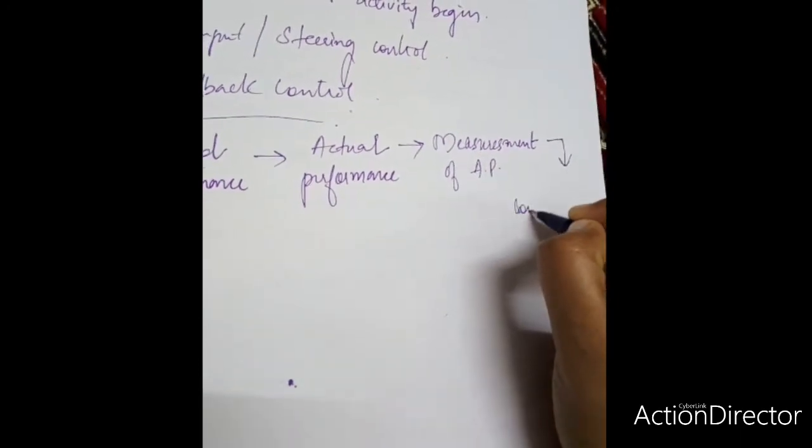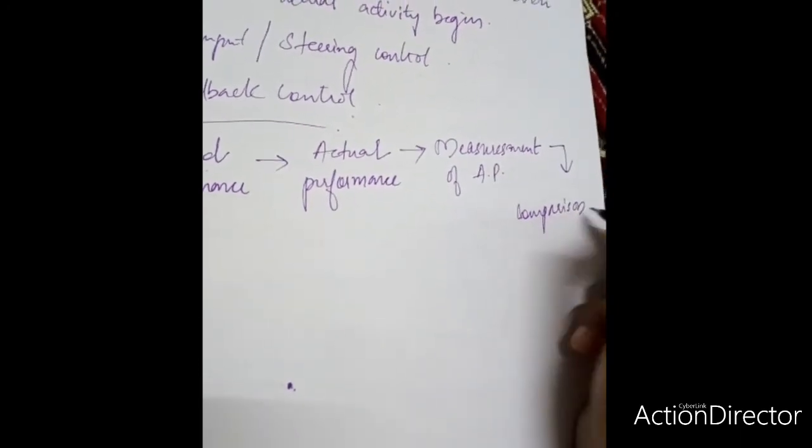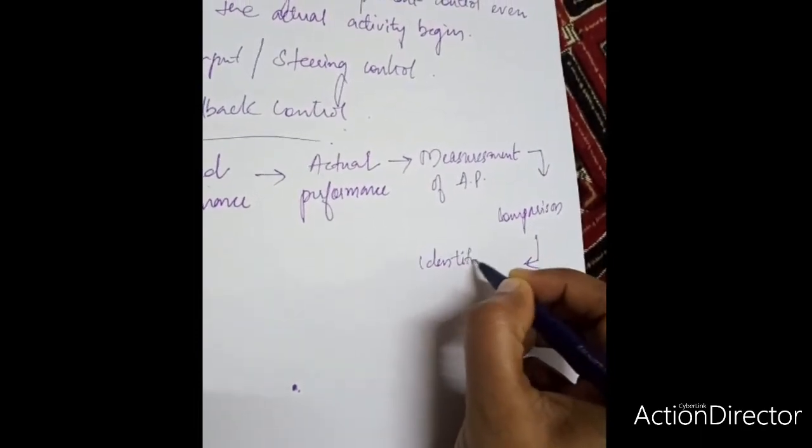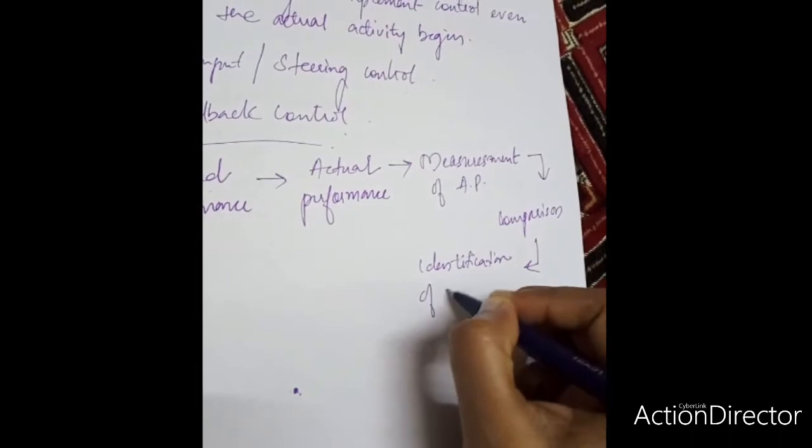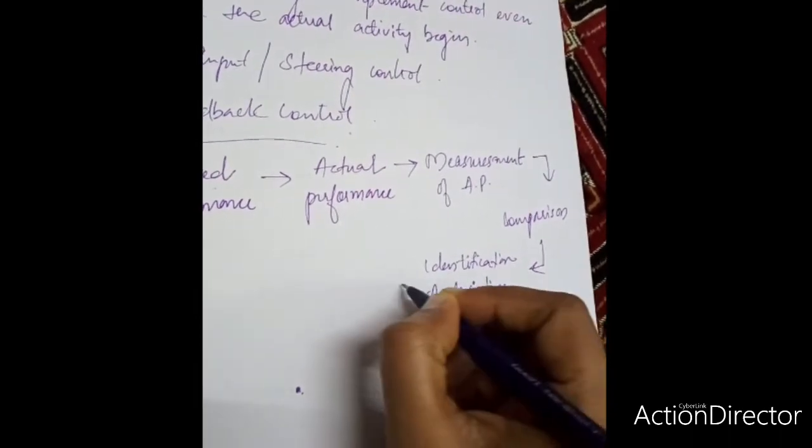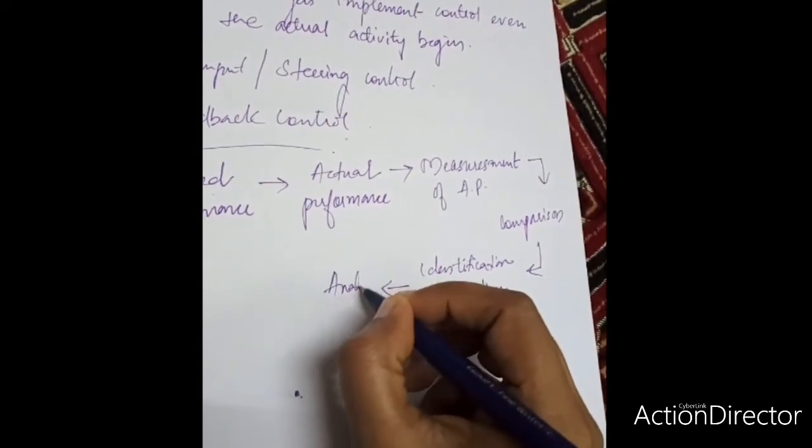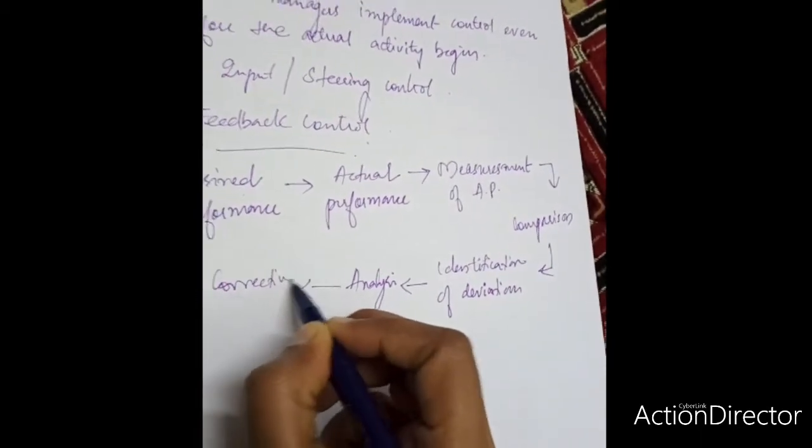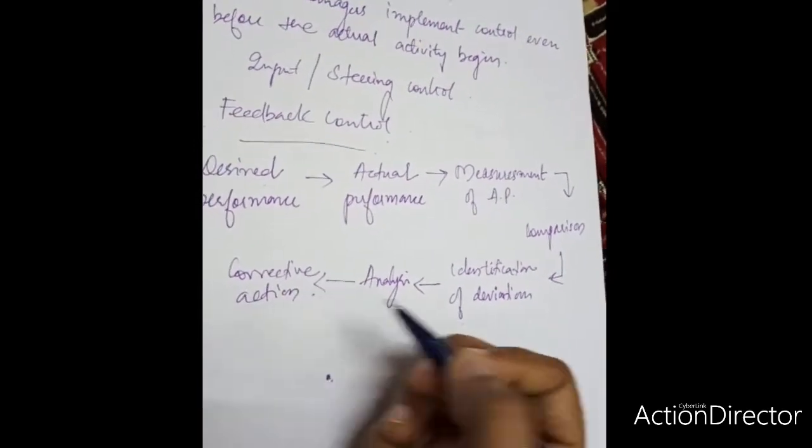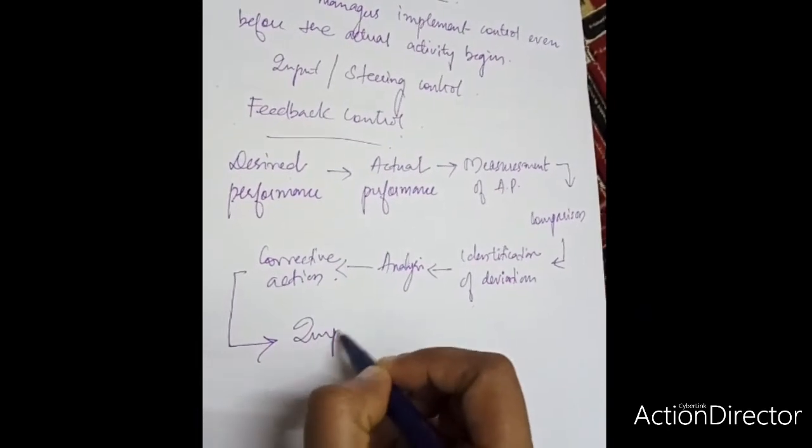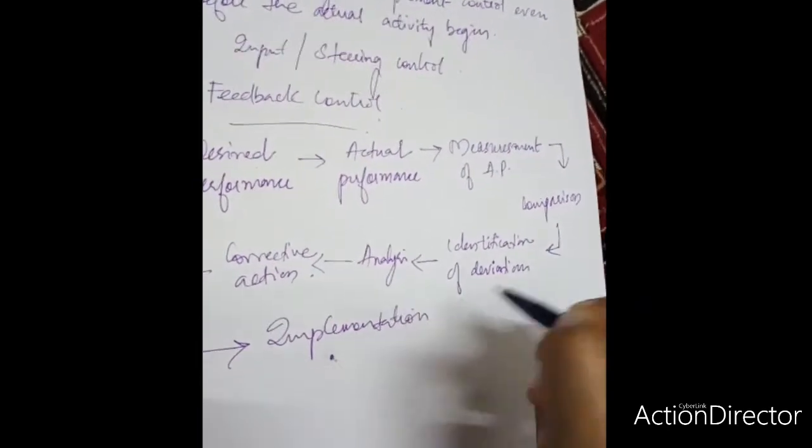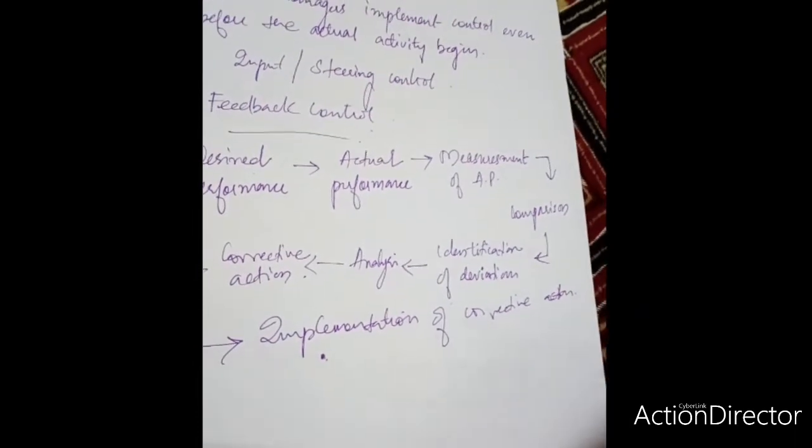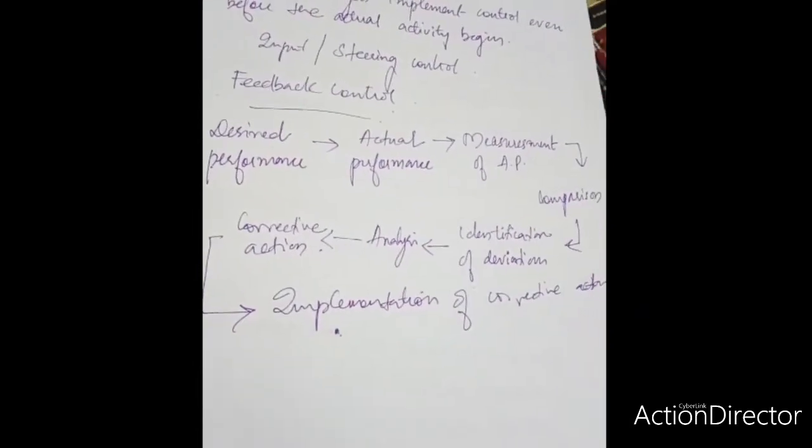After that, there will be a comparison, comparison of actual performance against the standards. After which, there is identification of deviations. After identification, there is analysis. After analysis only, we will find out the real problem. Corrective action is being assumed or identified and implementation of corrective action. At last, implementation of corrective actions. This is a simple layout of a feedback control system.